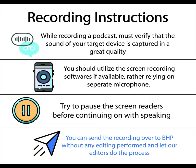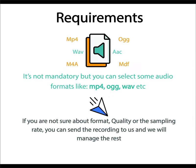For the best output, we recommend sending the recording over to us without any editing performed and letting our editors do the process. Requirements: the following requirements are not mandatory to fulfill. The audio format may be selected as OGG. The sampling rate may be set to a minimum of 24,000 and a maximum of 48,000. The bitrate may be set to above 100 kilobytes per second. If you're not sure about the format, quality, or sampling rate, we would advise sending the recording over to us and we would manage the rest.